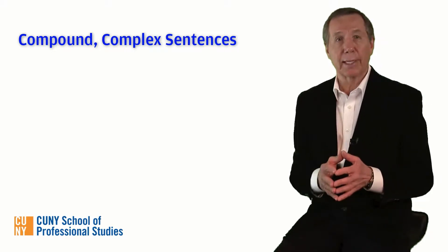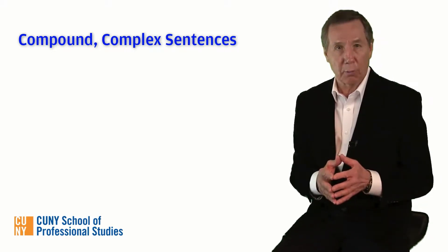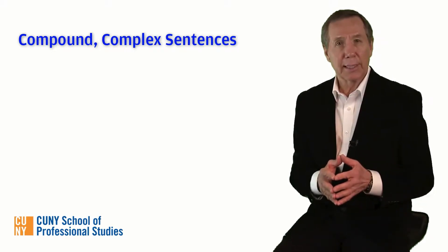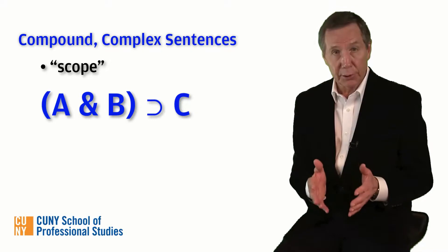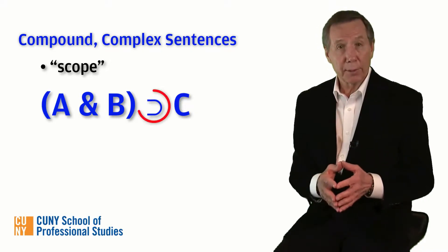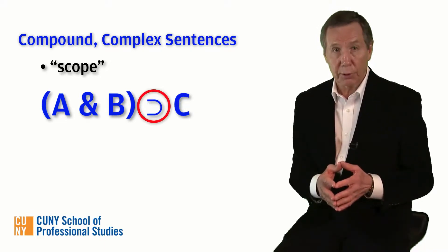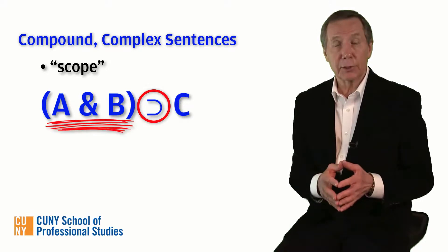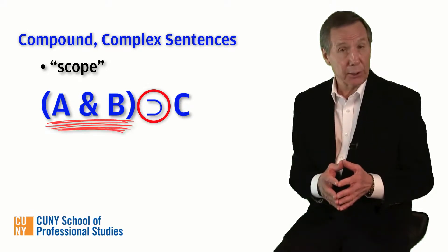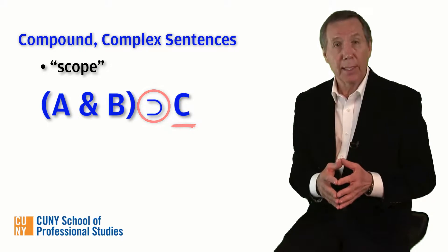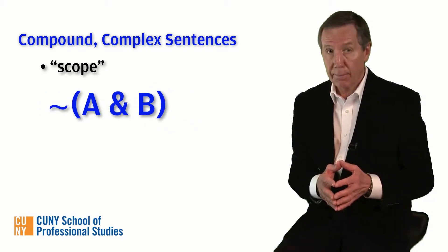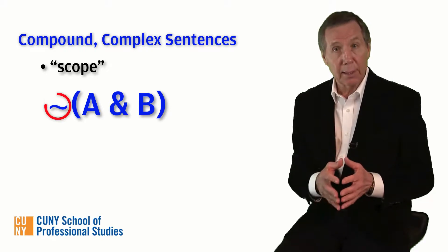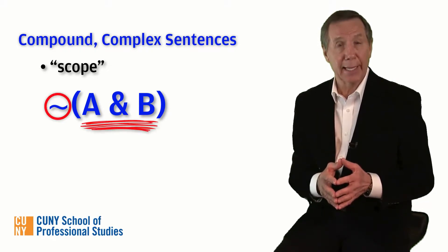When you use a connective to build a longer sentence from a shorter one, the shorter sentence is said to be in the scope of the connective. So in the sentence 'if both A and B then C,' the scope of the connective — in this case the horseshoe — includes the conjunction A and B as the antecedent and C as the consequent. In the sentence 'it is not the case that both A and B,' the scope of the tilde is the conjunction of A and B.